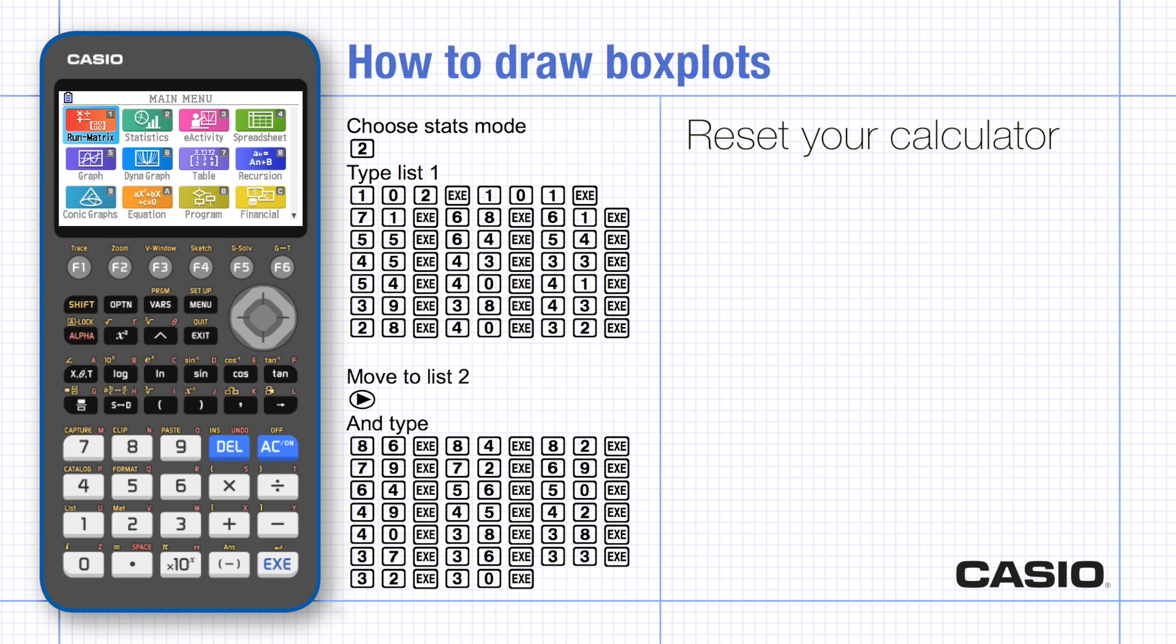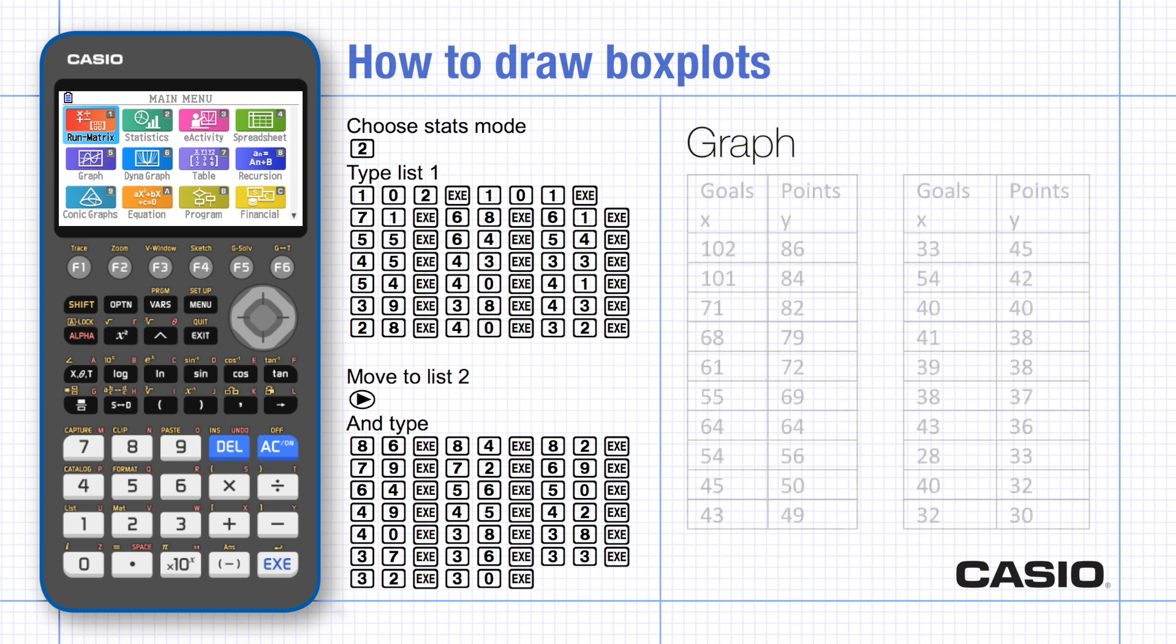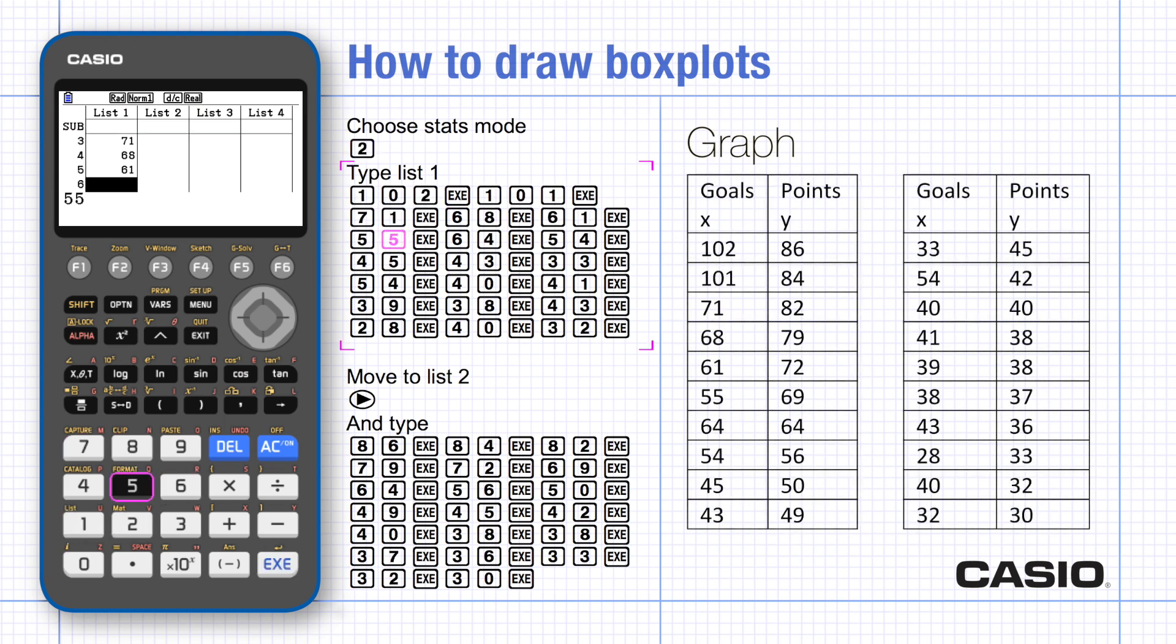The data I'm using here is the number of goals and the number of points for premiership teams in a season. Let's type in both sets of data. Choose stats mode, type the x-values first, and use execute between each value.